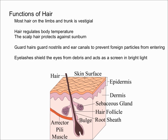Eyelashes can shield your eyes from debris, and they can also act as a screen — so when you squint in bright light, they essentially act as a screen to help protect your eyes.